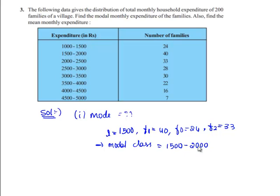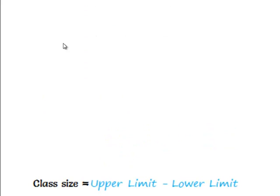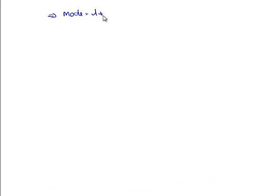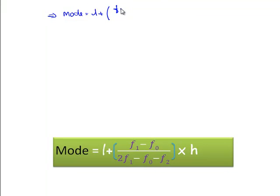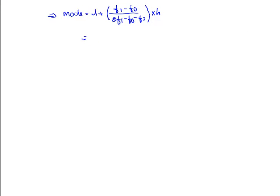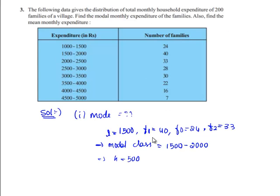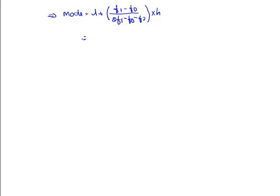As we know the formula for the mode that is L plus F1 minus F0 by 2F1 minus F0 minus F2 into H. Let's substitute all these values into the given formula.